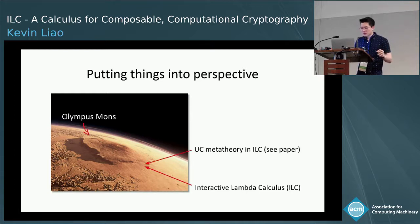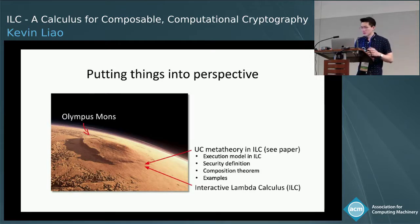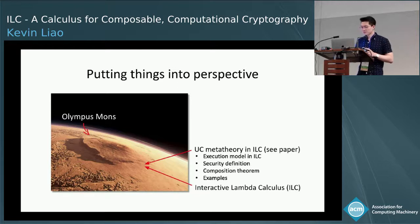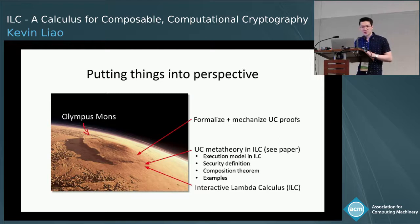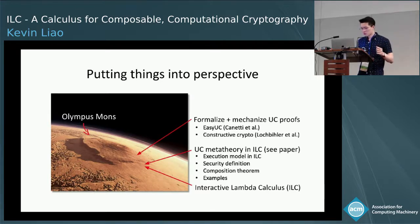We take a second step in our paper by developing UC-specific meta-theory in ILC: implementing the UC execution model, giving a security definition, giving a composition theorem and proving it, and going through some examples. A huge next step will be to formalize and mechanize the reasoning required for UC proofs, and there is some concurrent work being presented at CSF this week that makes good headway on these problems.